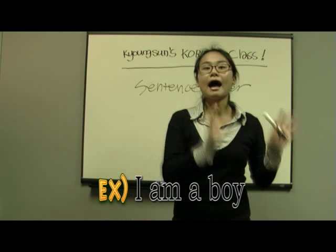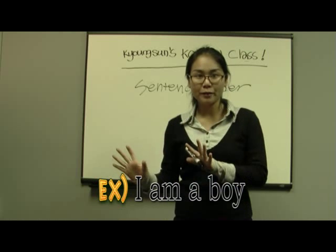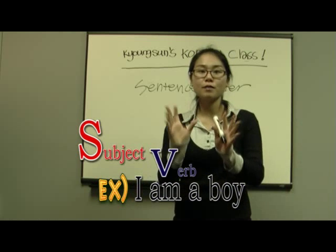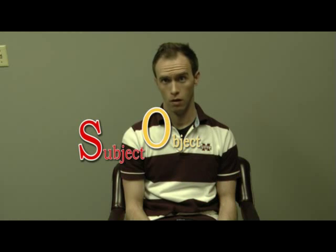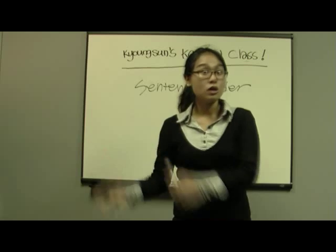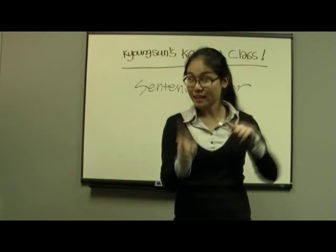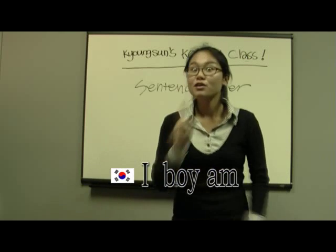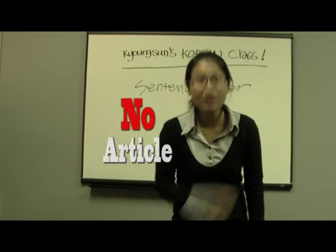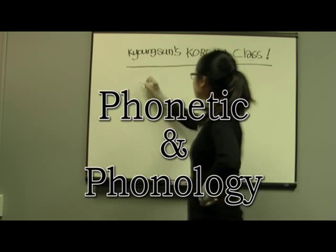For example, the sentence 'I am a boy' — it's subject, verb, object. But in Korean, it's subject, object, verb. So you're going to say, 'I, boy, am.' Don't forget, leave out the articles. Let's talk about phonetics and phonology.